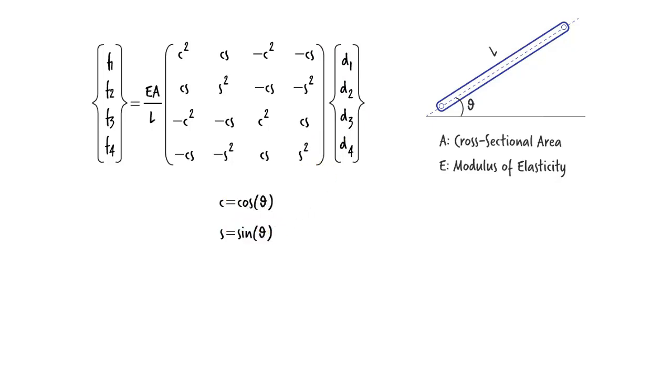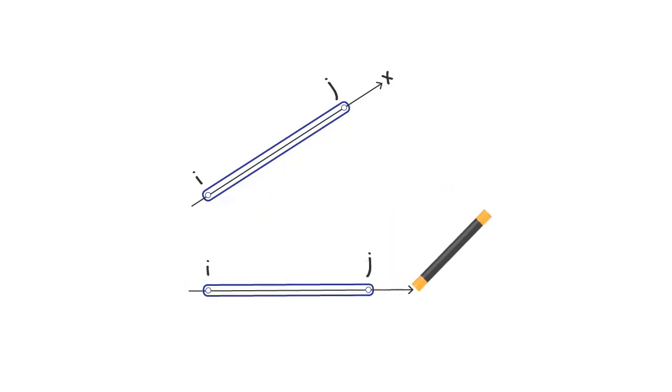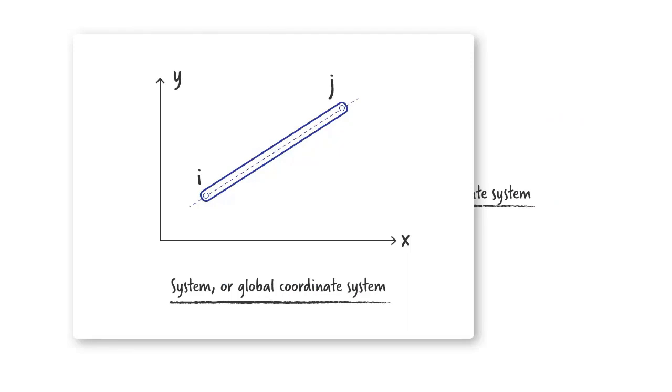But how do we come up with these coefficients? To answer this question, let's start by changing the coordinate system. I am going to define a local x-axis along the length of the member. For convenience, let me rotate the member clockwise so that the x-axis becomes horizontal. We refer to this as the member or local coordinate system, whereas this is called the system or global coordinate system.